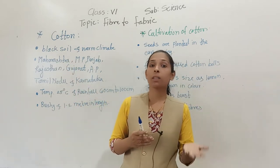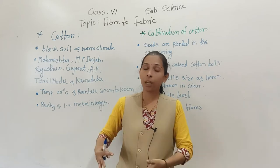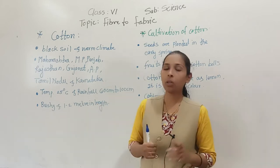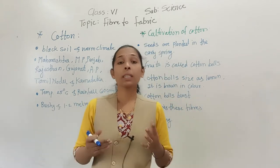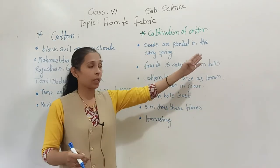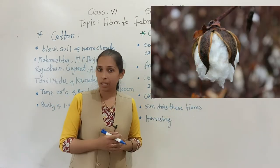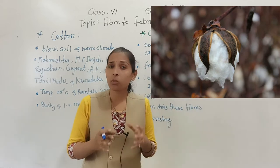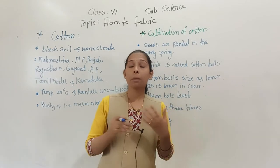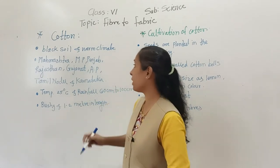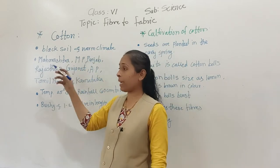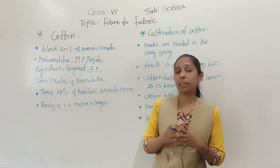Let us discuss about cotton — how cotton is produced in the field and how different fabrics are made from cotton. Cotton is a soft fiber that grows around the seed. Here in the image you can see how it exactly grows around the seed. These cotton plants usually grow in places where the soil is black and the climate is warm.